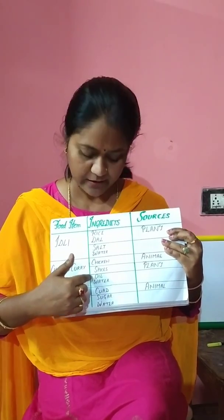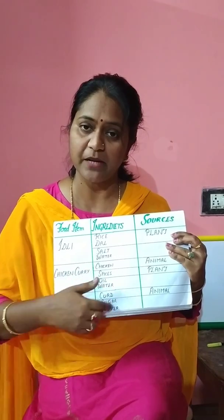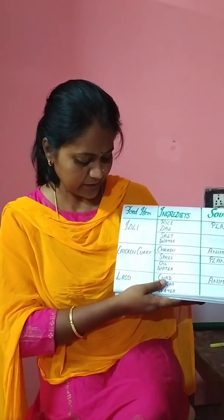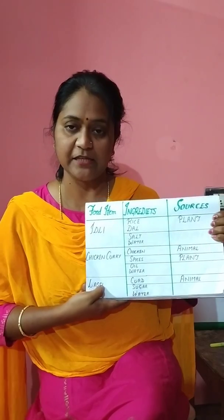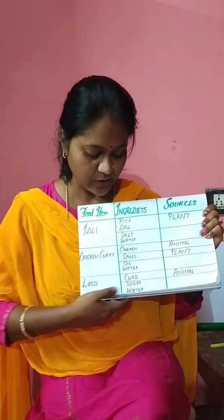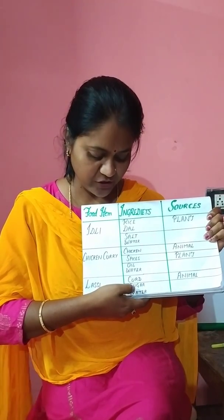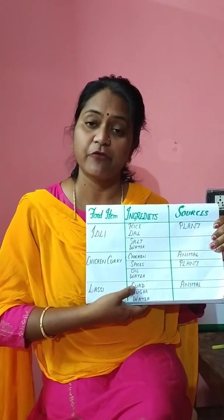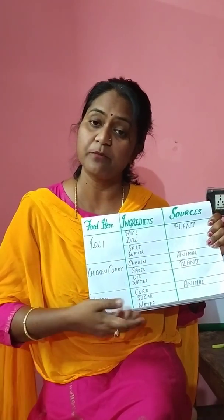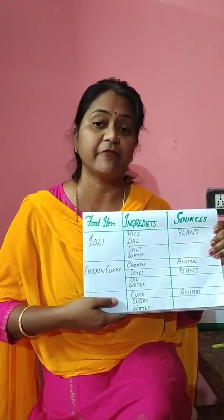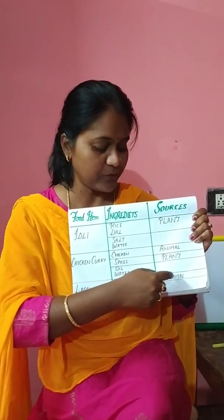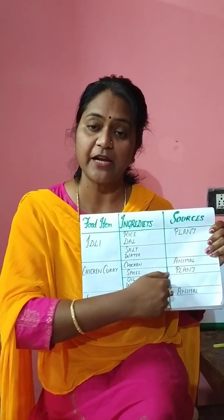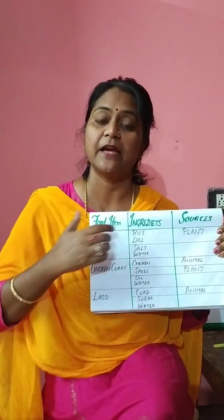Oil also we get from the plant, and water is a natural resource. For lassi, you need curd, sugar, and water. The curd is made from milk, and milk we get from animals. So the source of curd is also actually the animal.